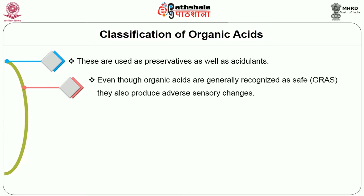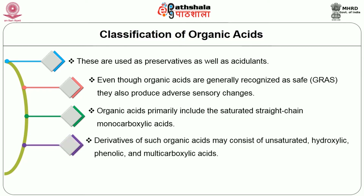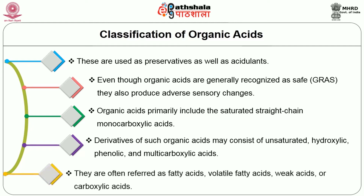The structures of a few organic acids are used as preservatives as well as acidulants. Even though organic acids are generally recognized as safe — abbreviated as GRAS — they also produce adverse sensory changes. Organic acids primarily include the saturated straight-chain monocarboxylic acids. Derivatives of such organic acids may consist of unsaturated, hydroxylic, phenolic and multicarboxylic acids. They are often referred to as fatty acids, volatile fatty acids, weak acids or carboxylic acids.